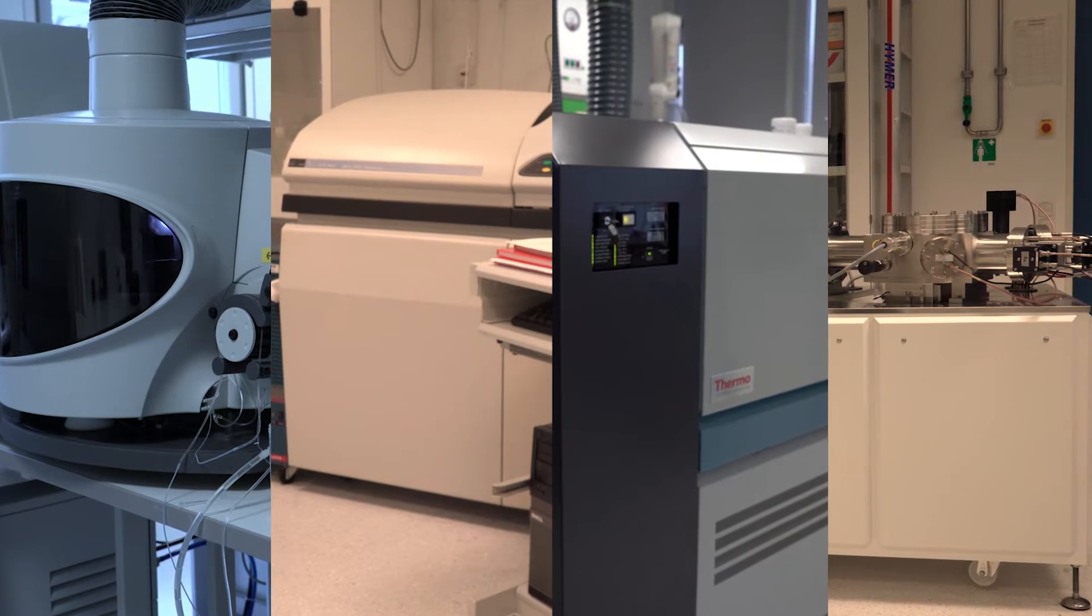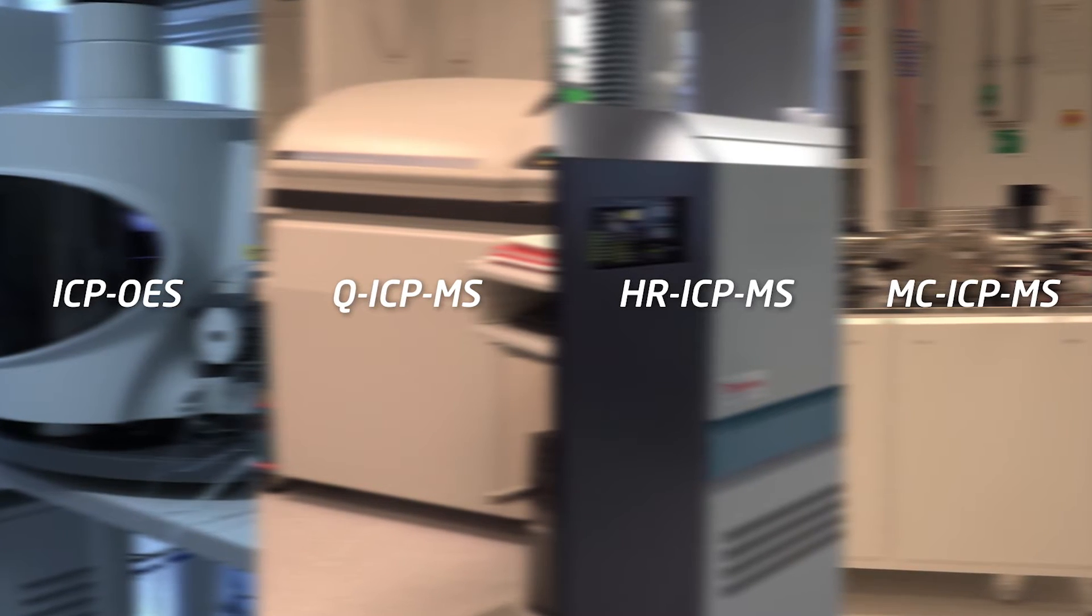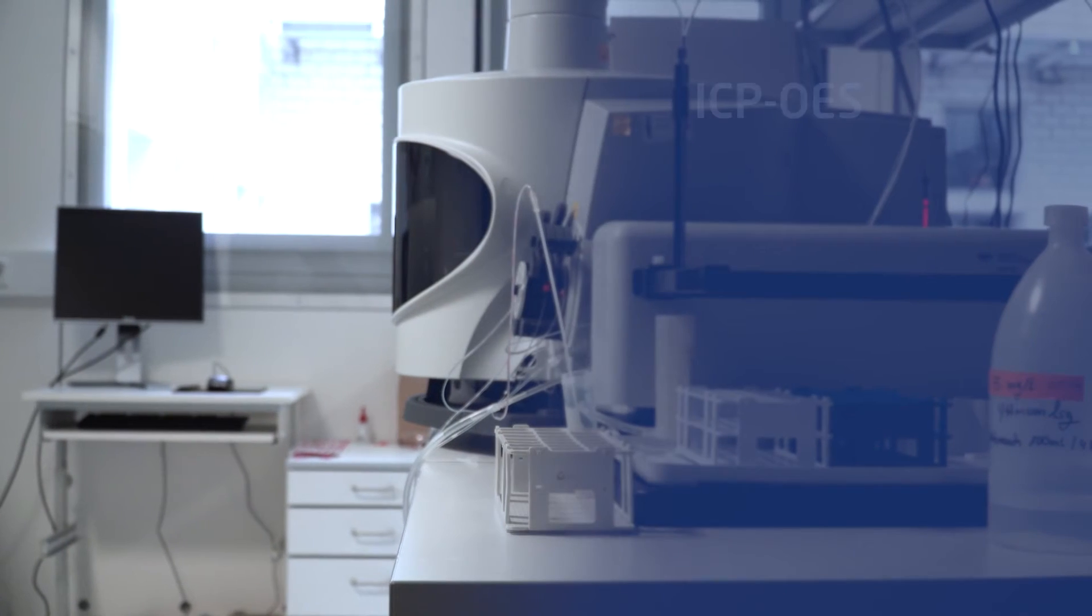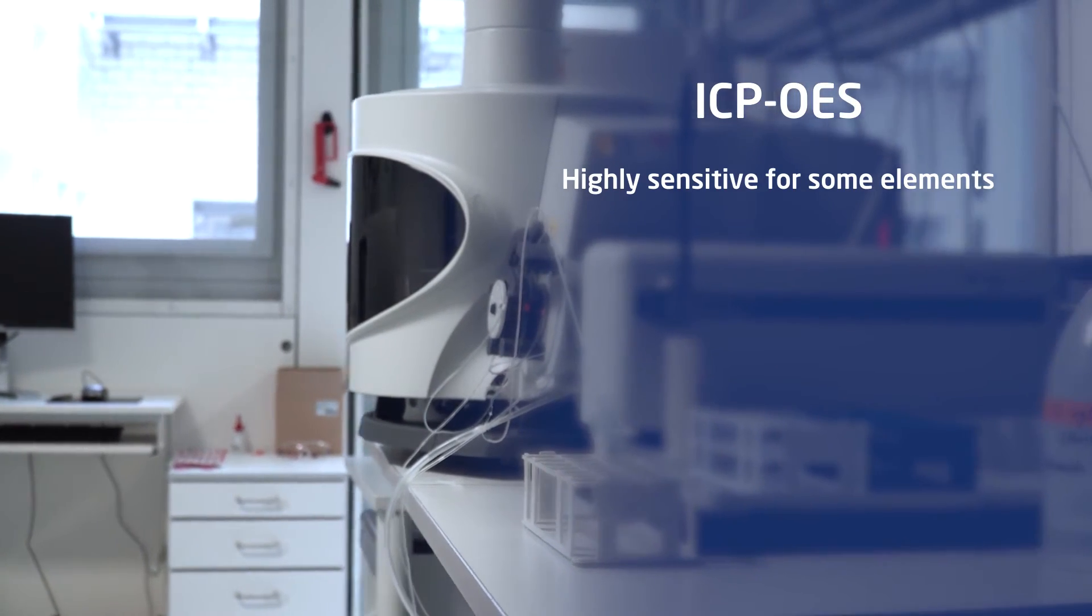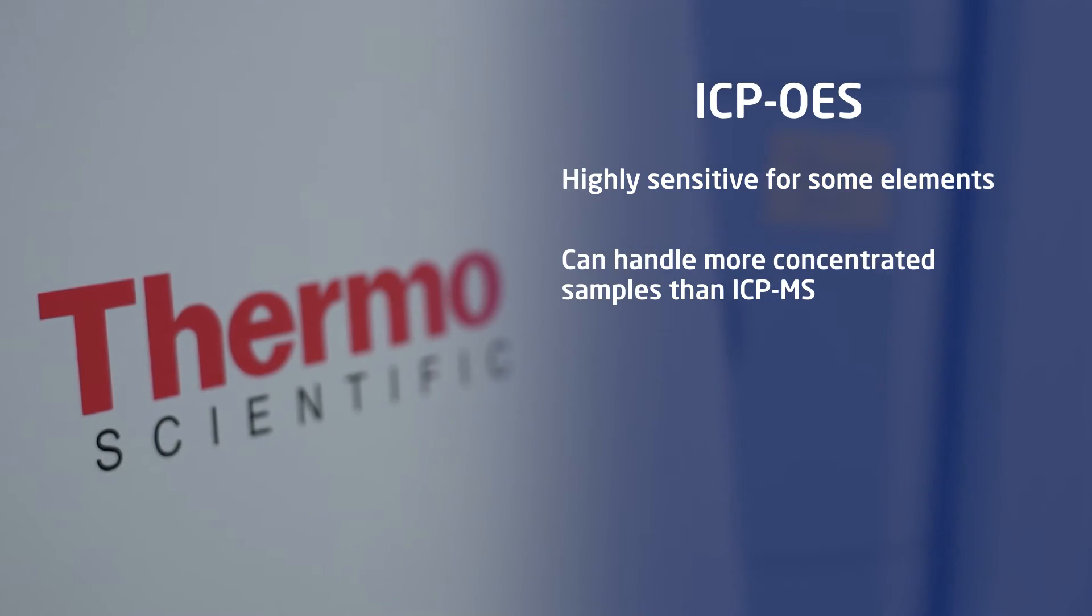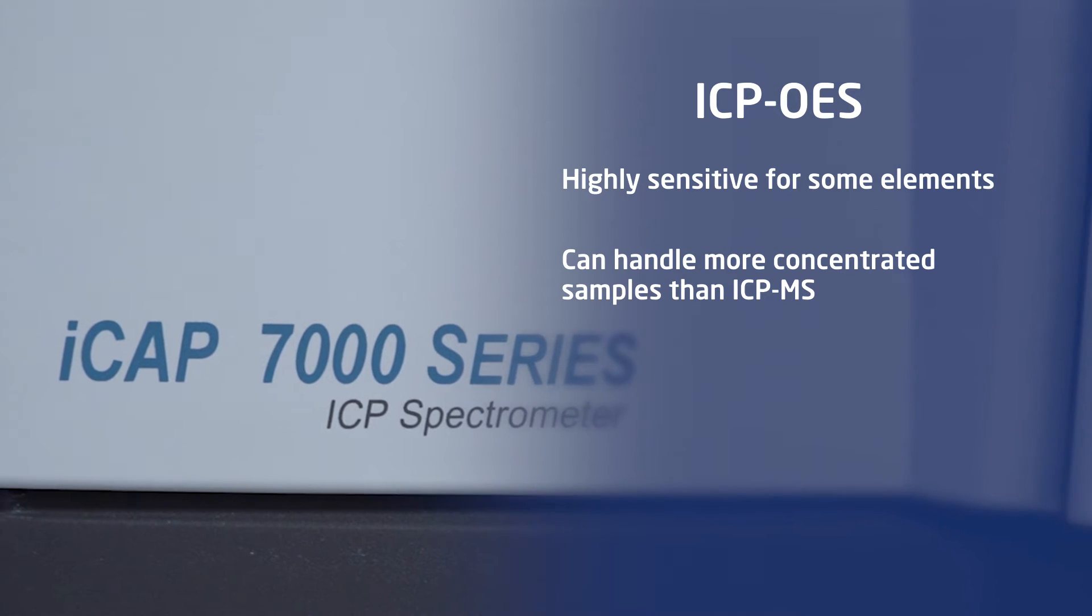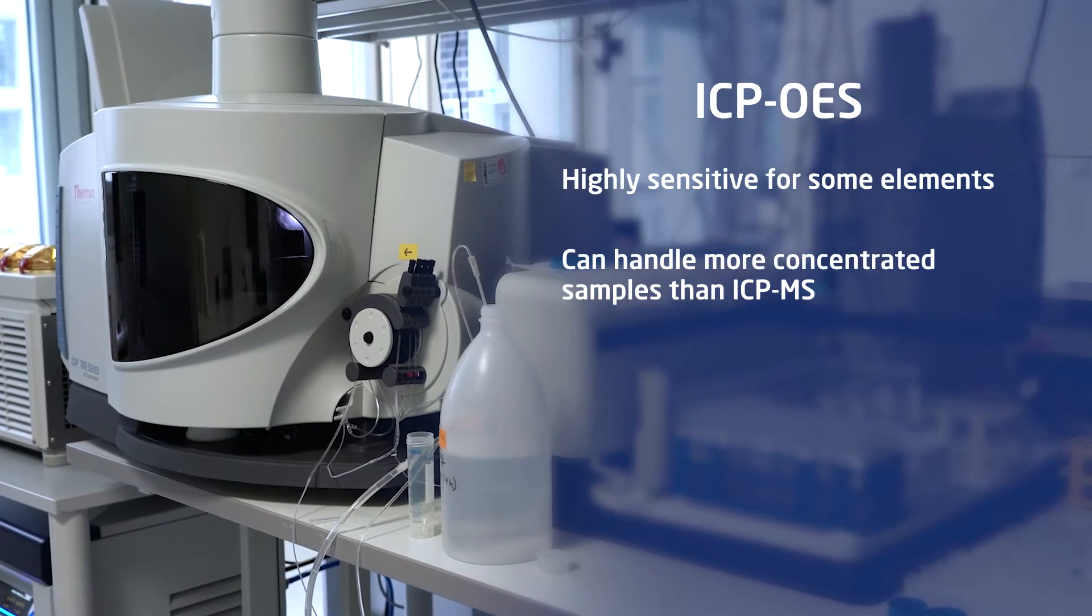In principle, there are four types of ICP instruments. The choice of which instrument to use depends on the elements you are trying to detect and the available resources. The ICP-OES is very sensitive for some elements and can handle more concentrated samples than an ICP-MS and is therefore very useful for the analysis of marine particles.